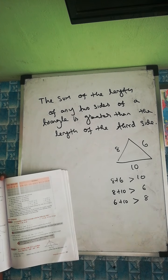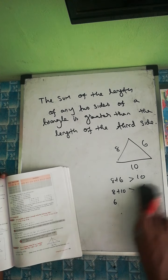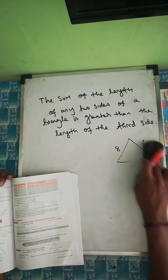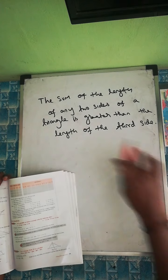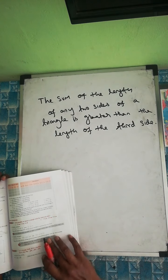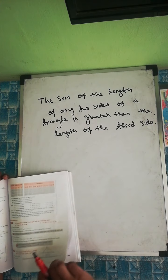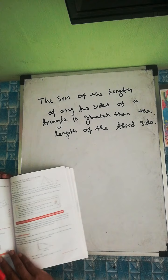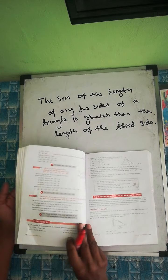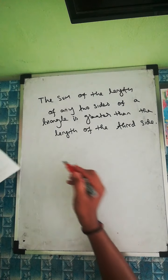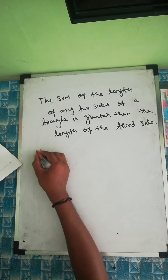Now look at exercise 9c. Try the first question yourself first, then start the exercise. The first question asks: can triangles be constructed with the following measurements of sides? Justify your answer.